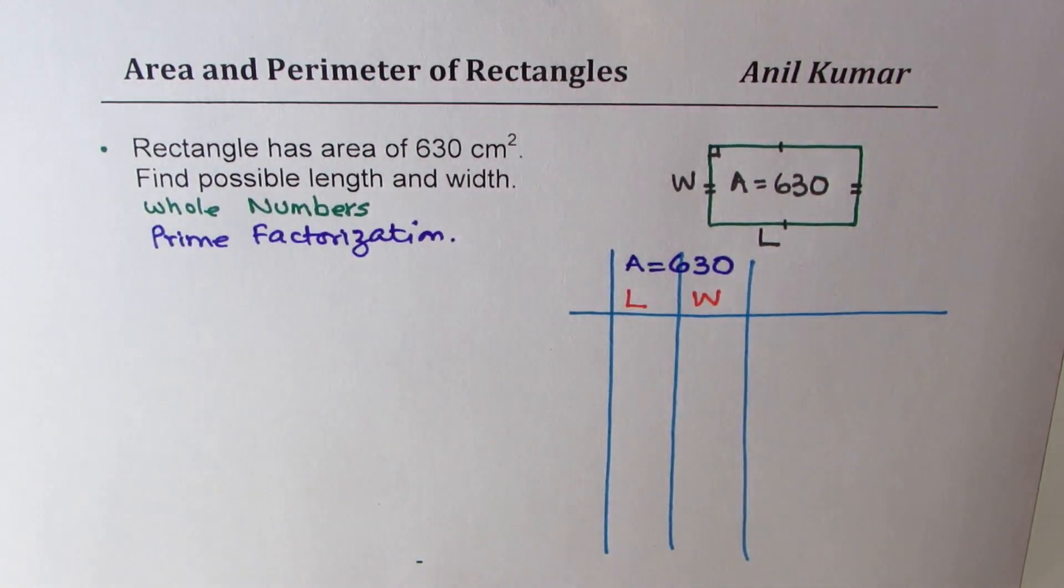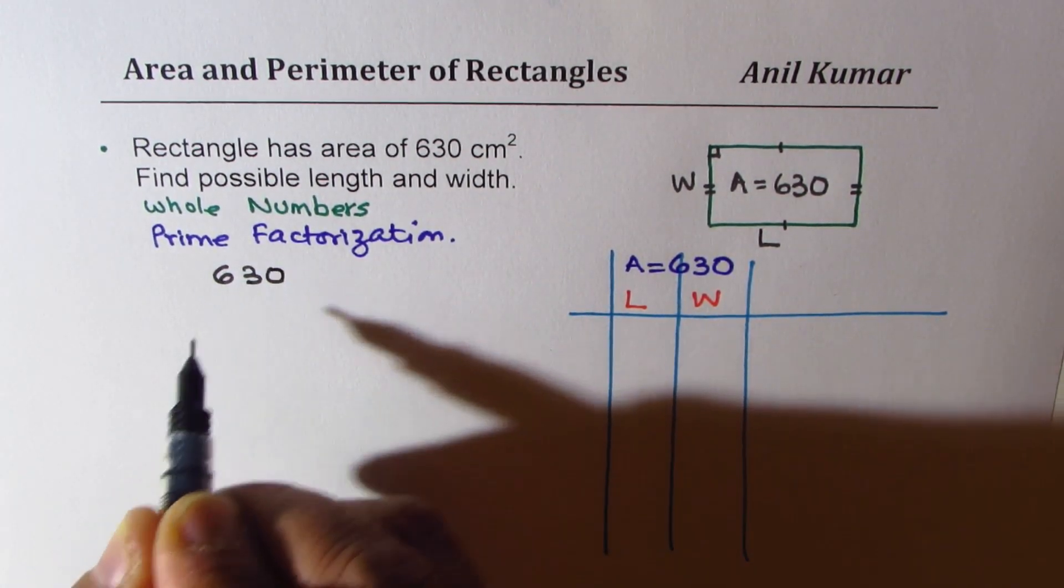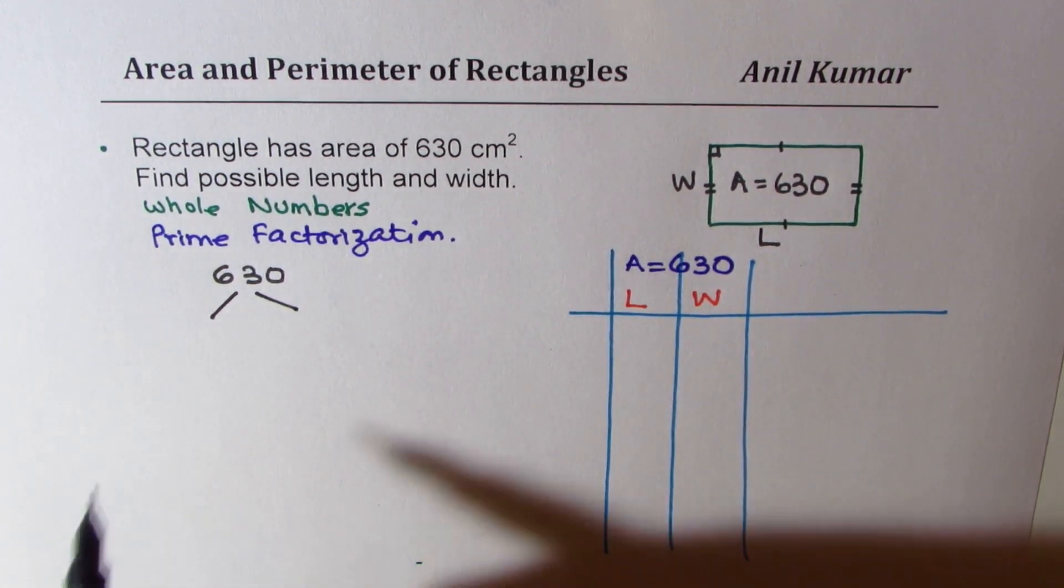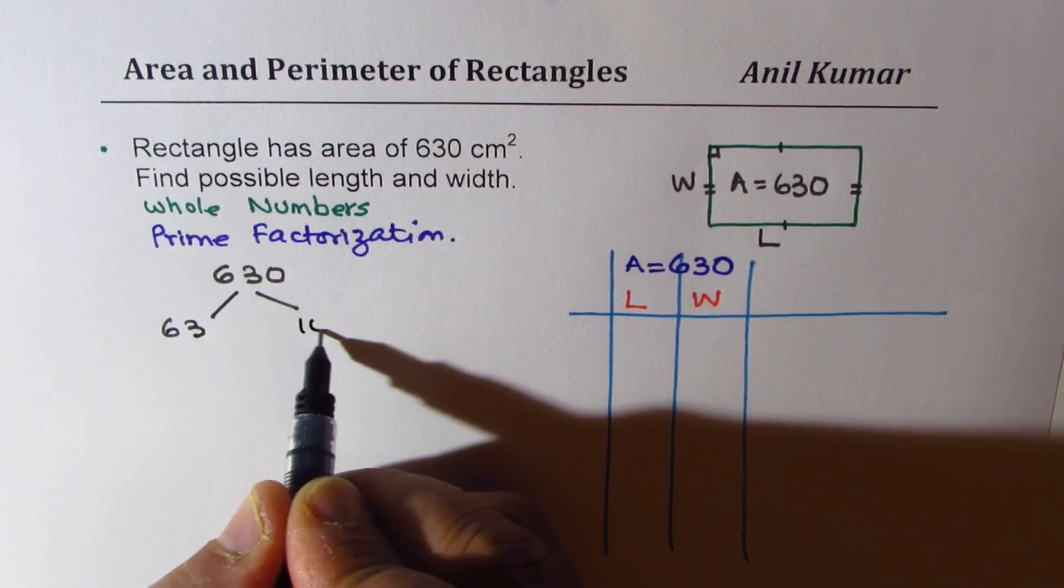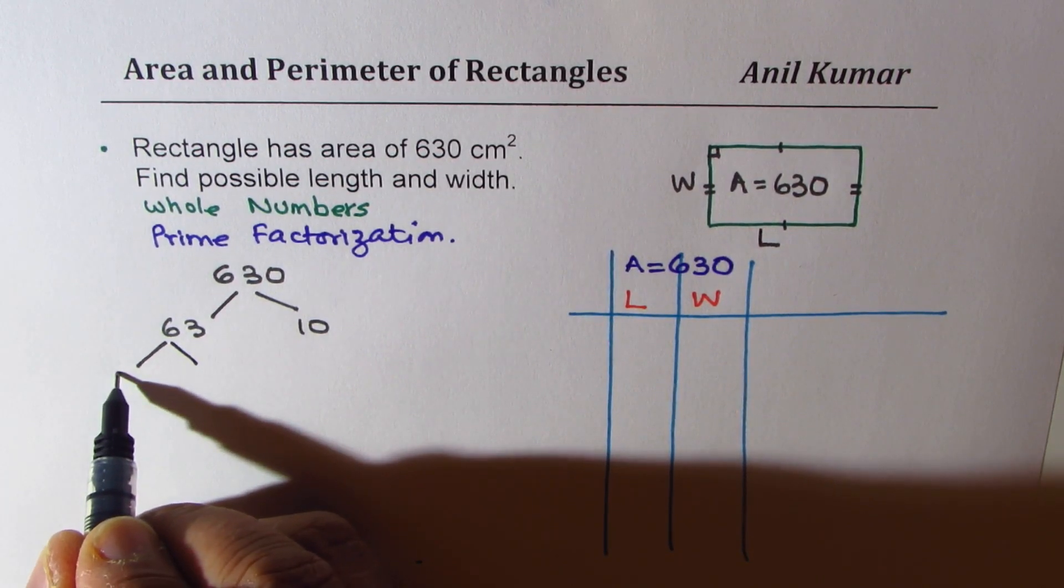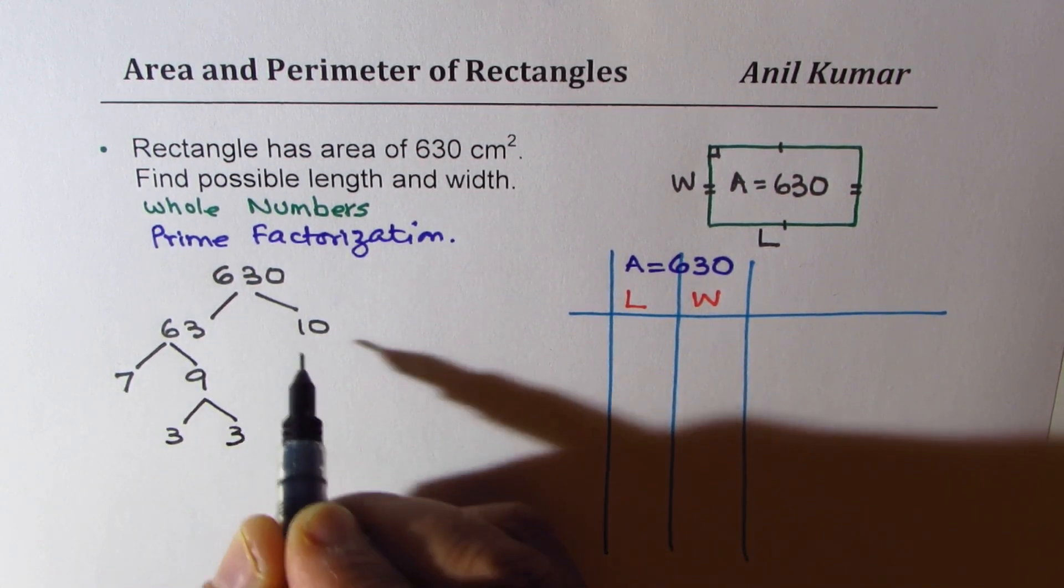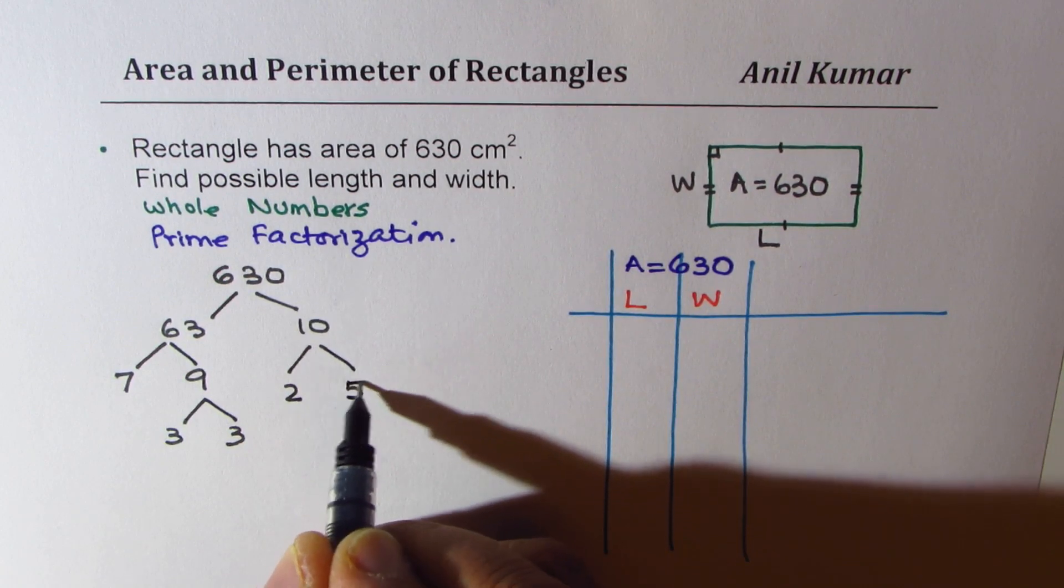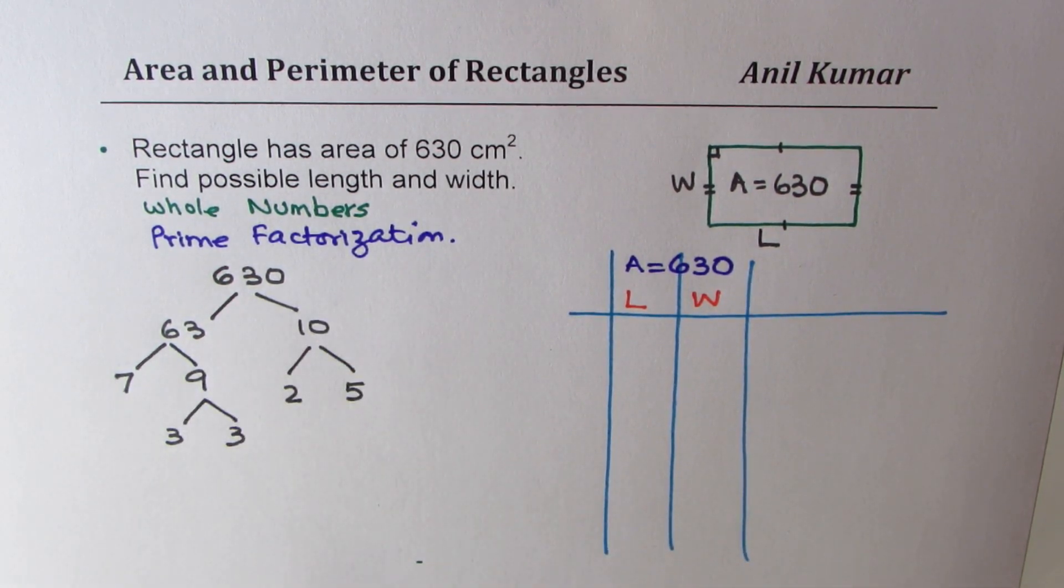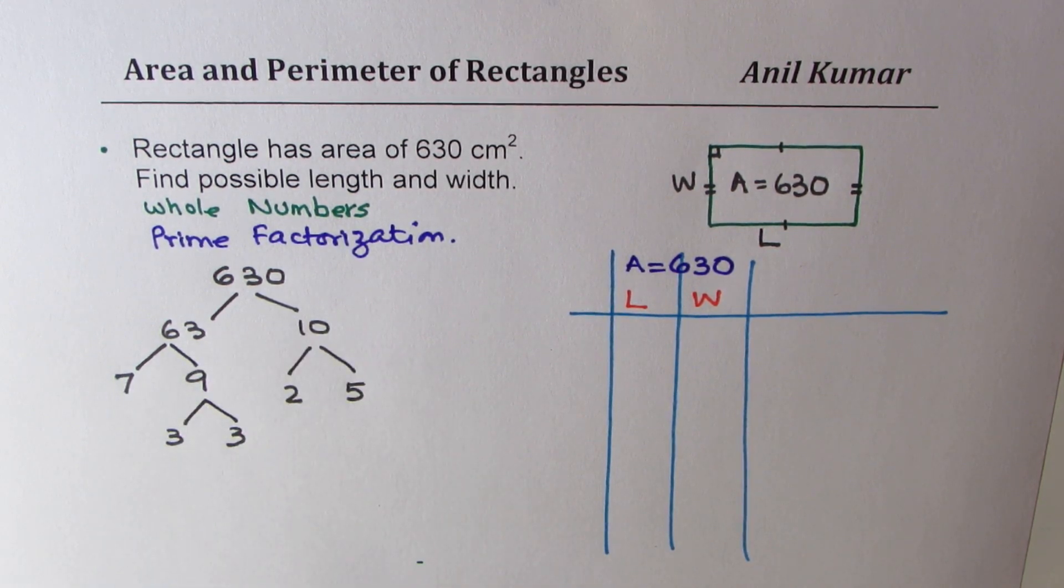Let's just do factorization. Now, when we talk about factors, we know 630 could be written as combination of 7 times 9. And 9 could be written as 3 times 3. 10 could be written as 2 times 5. So that gives you combination of some numbers which will definitely give us 630. Area is product of length and width. So these are the different numbers which can always give us the result.